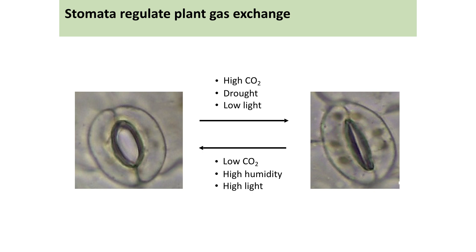When the stomata are open, this allows gases to diffuse into the plant, which are required for processes such as photosynthesis. Yet as a consequence, water can also move out of the stomatal pore via evapotranspiration, and excessive transpiration can be detrimental to plant growth and yields.